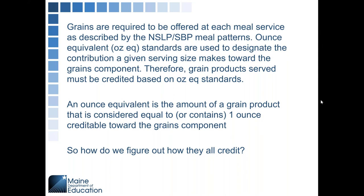Grains are required to be offered at each meal service as described by the National School Lunch Program and School Breakfast Program meal patterns. Ounce equivalent standards are used to designate the contribution a given serving size makes towards the grain component. Therefore grain products served must be credited based on ounce equivalent standards. An ounce equivalent is the amount of grain product considered equal to or containing one ounce creditable towards the grain component.